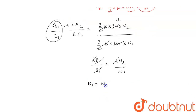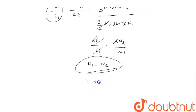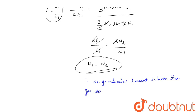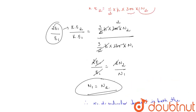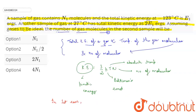Therefore, the number of molecules present in both gas samples are equal, which means the number of gas molecules in the second sample will be N1. So option one is the correct answer. This is the solution, thank you.